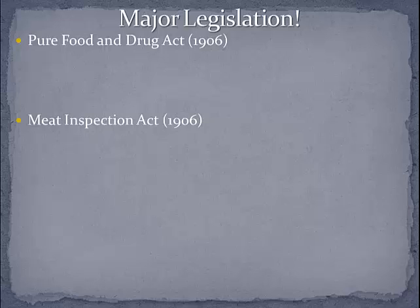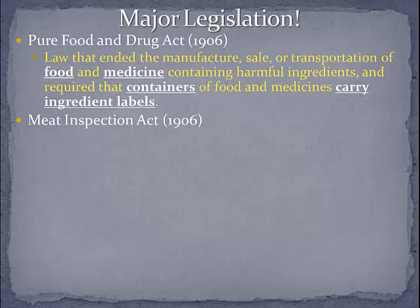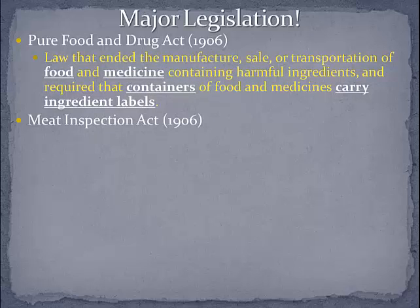We have the Pure Food and Drug Act in 1906 and the Meat Inspection Act of 1906 — both passed in the same year, both passed in response to the same thing. The Pure Food and Drug Act was a law that ended the manufacture, sale, or transportation of food and medicine containing harmful ingredients, and required that containers of food and medicines carry ingredient labels. So if you have food or a drink in front of you, check the label — it goes back to the Pure Food and Drug Act, which established the Pure Food and Drug Administration.